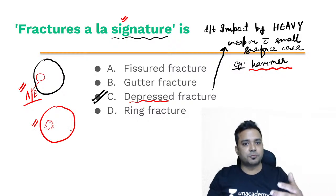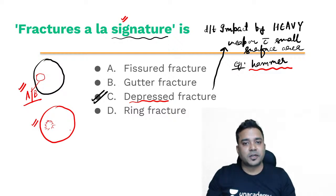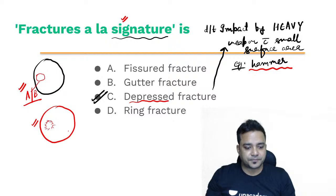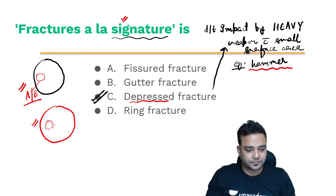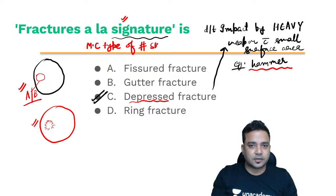The most common type of skull fracture is the linear fissured fracture — option A is the correct answer. Gutter fracture is produced due to tangential gunshot wounds, also called glancing bullets, where the bullet takes away a part of the outer table of the skull, producing a gutter-like groove only in the outer table.